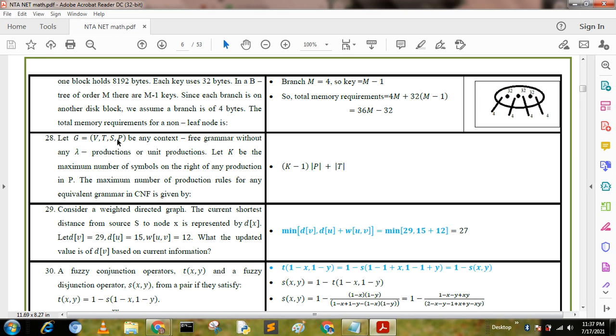Let G = (V, T, H, P, B) be a context-free grammar without any null productions or unit productions. Let k be the maximum number of symbols on the right of any production in P. The maximum number of production rules for any equivalent grammar in CNF is given by: (k minus 1) times |P| plus |P|.